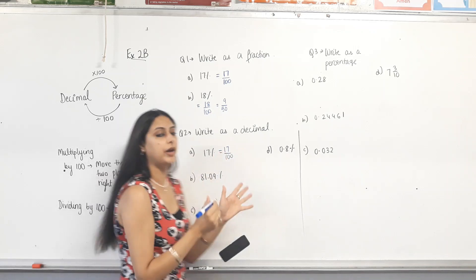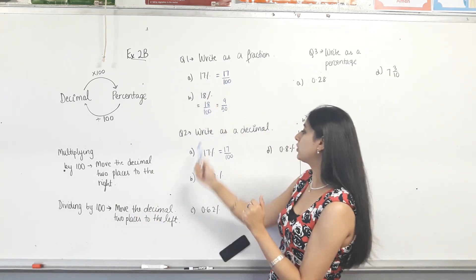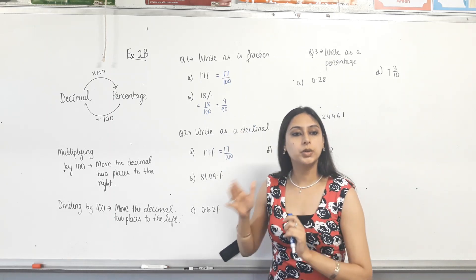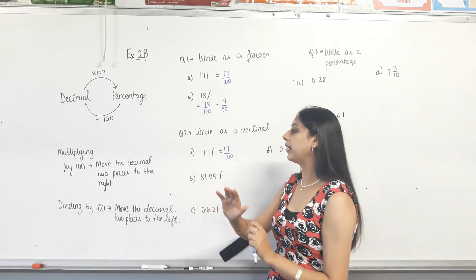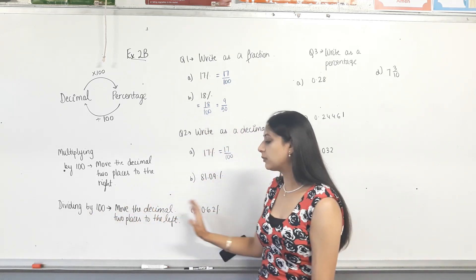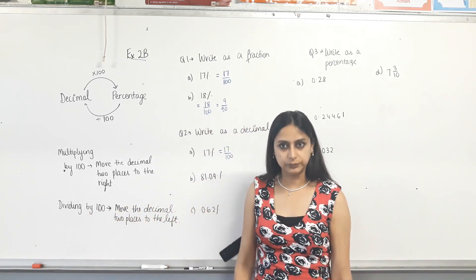Now, you're not writing it as a fraction, though. You're writing it as a decimal. Same question. This is writing as a fraction. This is writing as a decimal. So a recap on how do we divide by 100. If we're dividing something by 100, we move the decimal two places to the left.